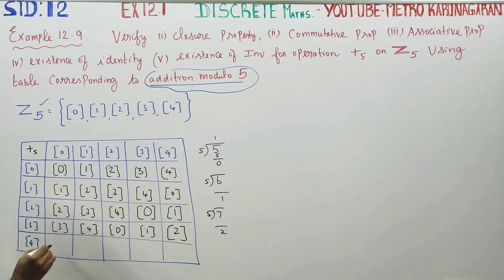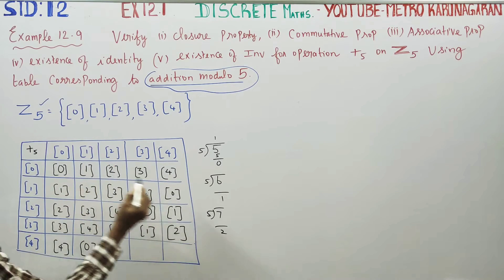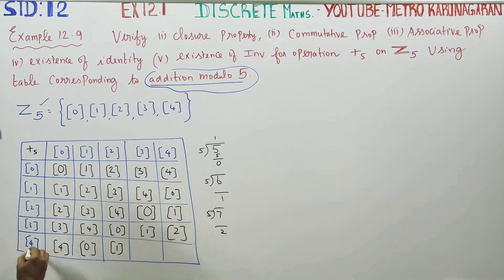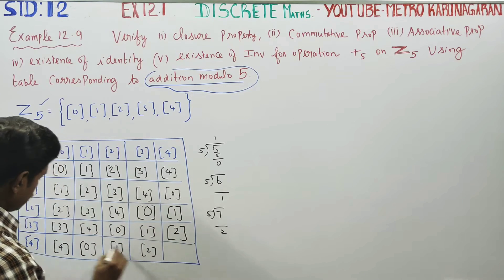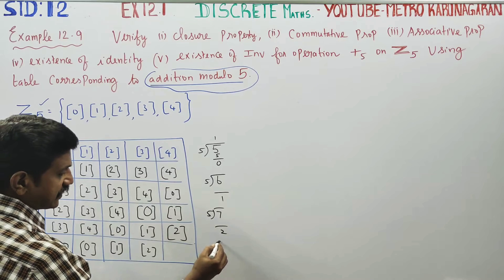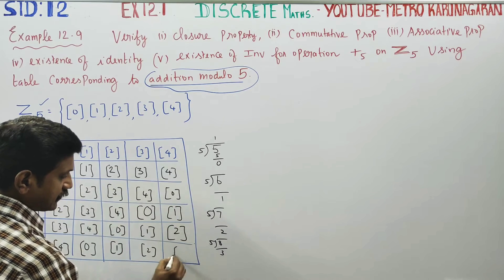Row 4: 4 plus 0 is 4; 4 plus 1 is 5, remainder 0; 4 plus 2 is 6, remainder 1; 4 plus 3 is 7, remainder 2; 4 plus 4 is 8, and 8 mod 5 gives remainder 3.